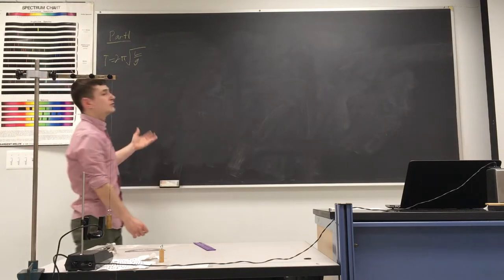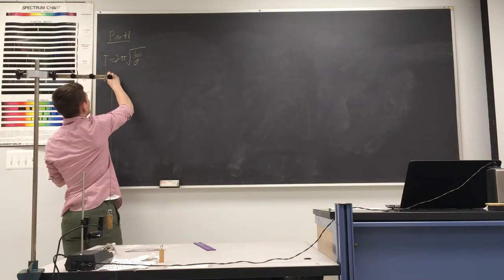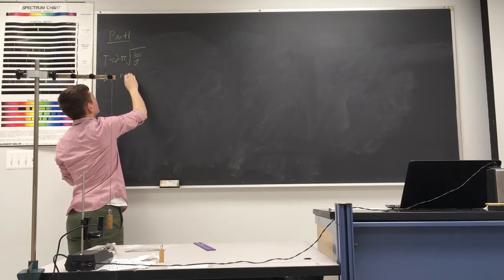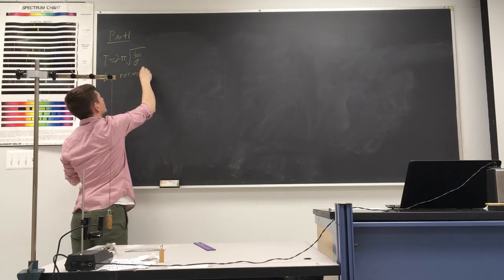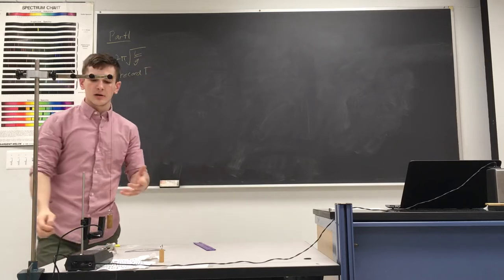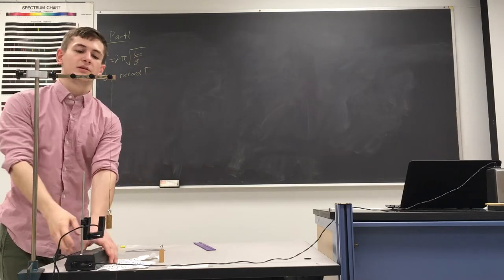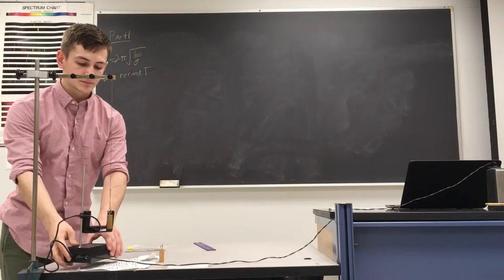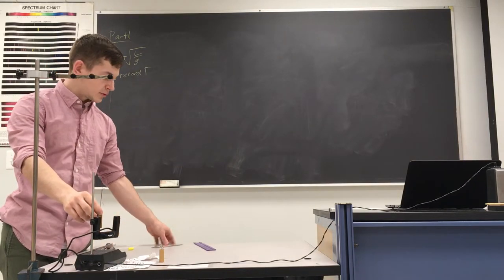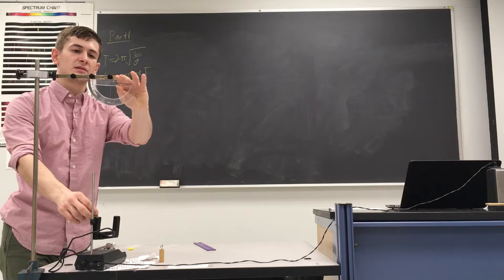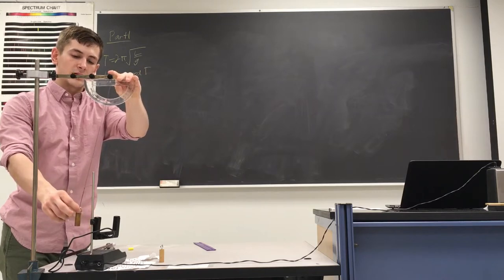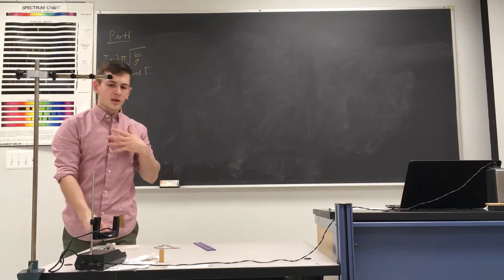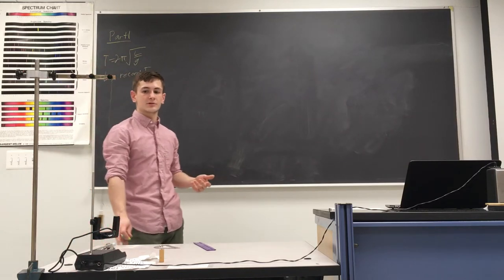Once we do that, we know L because we can measure it, and we're going to record the period. We take the photogate and set it to pendulum mode. We use a protractor to make sure we're releasing at less than 10 degrees, then let it go, and the photogate will calculate the period for us.